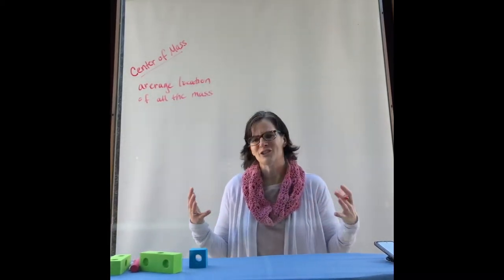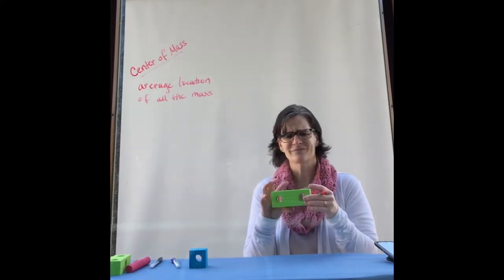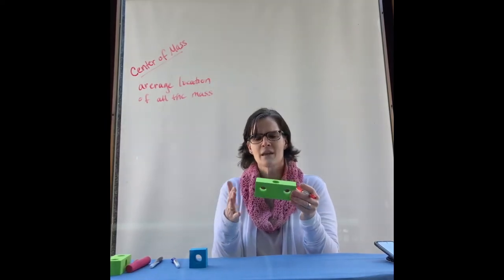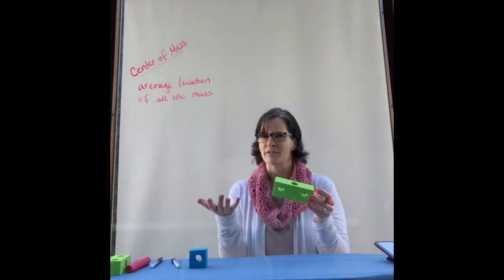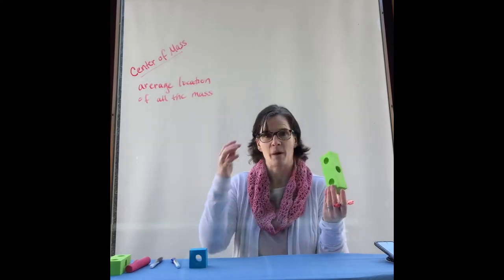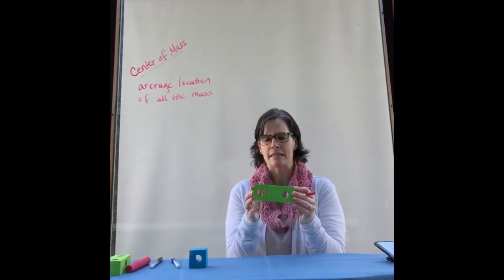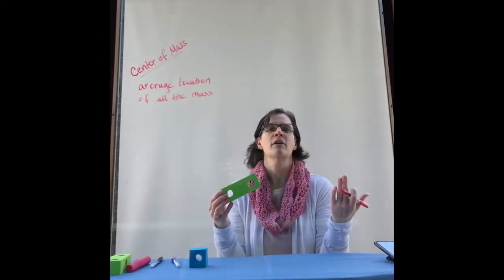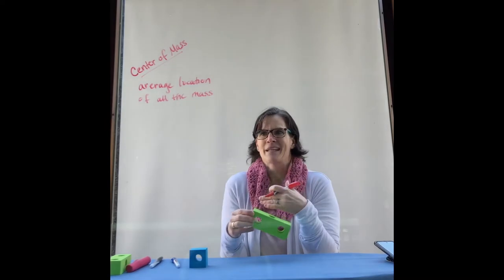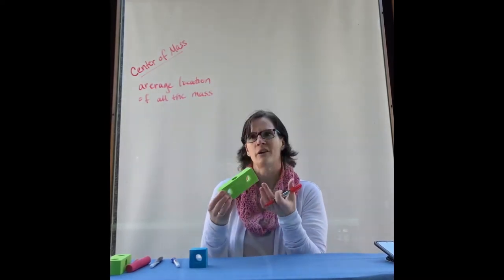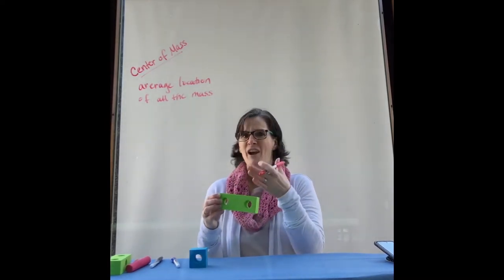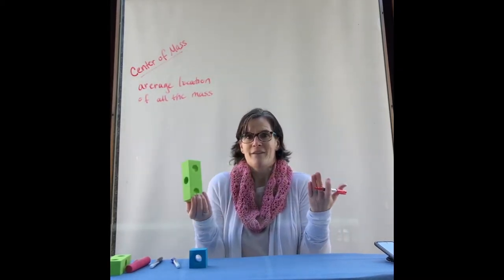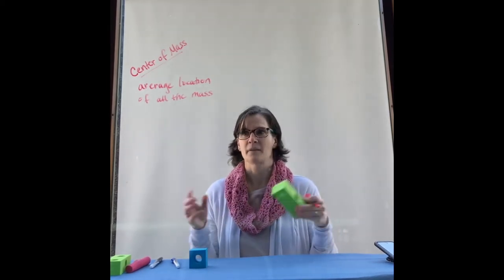If I were to look at an object — let's say this brick — and I wanted to know on average where the mass is located, I'd have to define a reference point. We define reference points all the time in physics. Then I take a tiny little piece of mass and look at how far away it is from the reference point. I do that for every little tiny piece of mass in the object and take the average. That, in a nutshell, is the average location of all the mass.